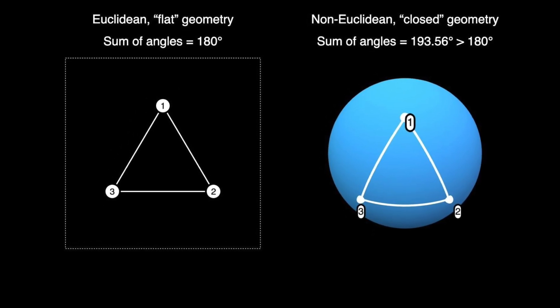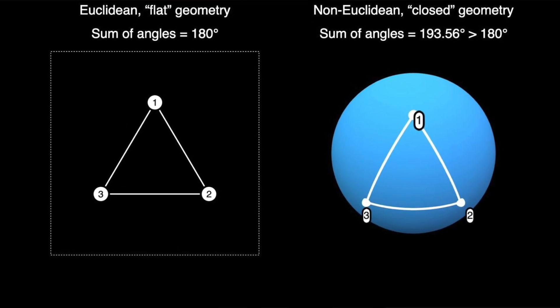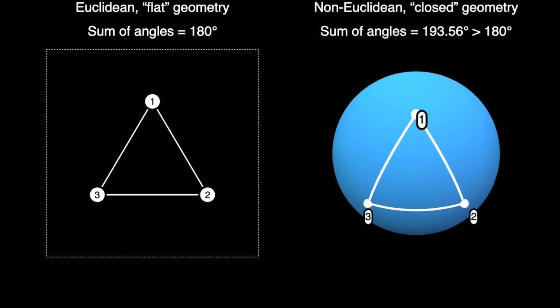then the sum of the angles of the triangle will be larger than 180 degrees and the difference with the prediction of the Euclidean geometry is proportional to the mass that you put in and inversely proportional to the radius in which this mass is contained.